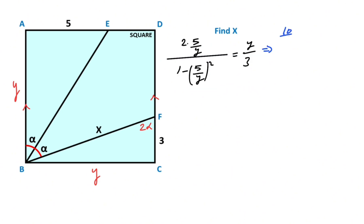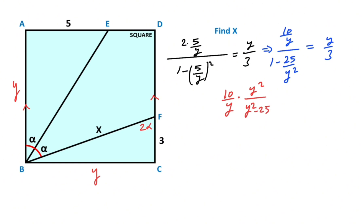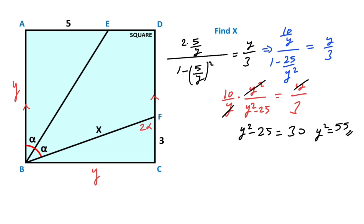Therefore, 10 over y divided by 1 minus 25 over y squared equals y over 3. So 10 over y times y squared over (y squared minus 25) equals y over 3. If we simplify the expression, these cancel out, meaning y squared minus 25 equals 30, so y squared equals 55.